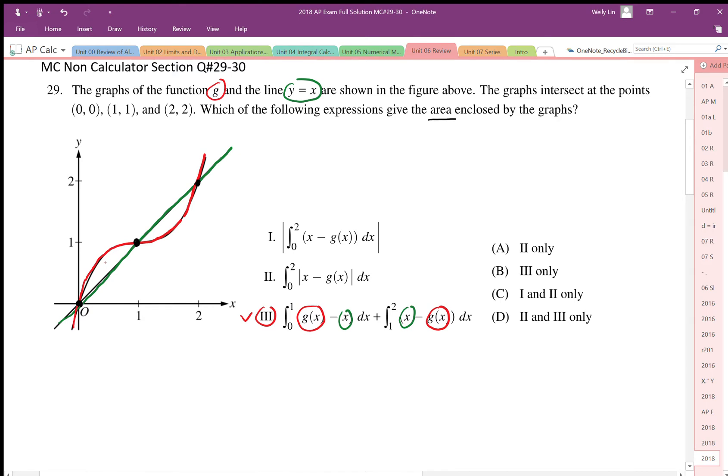But since we absolute value it, this difference here is always going to be positive, regardless whether we're measuring here or here. The absolute value makes that difference positive, so this is correct.